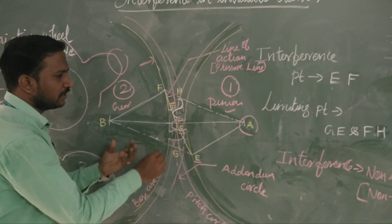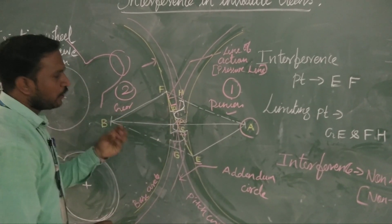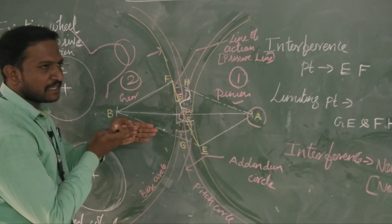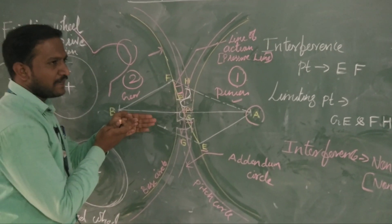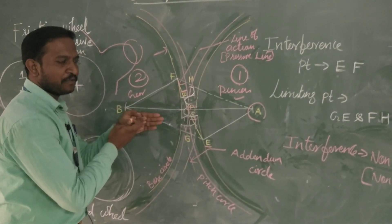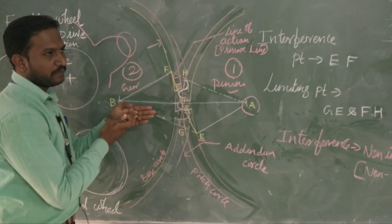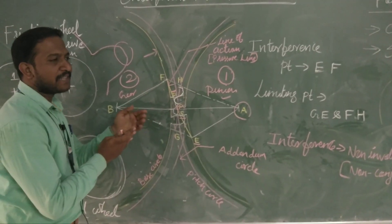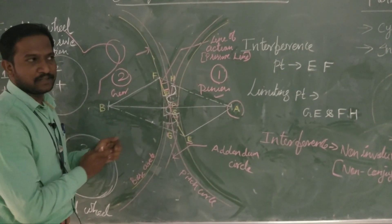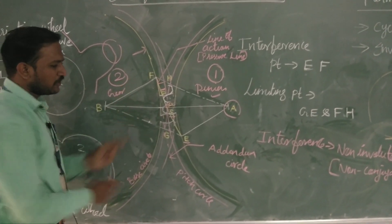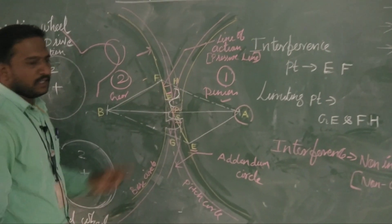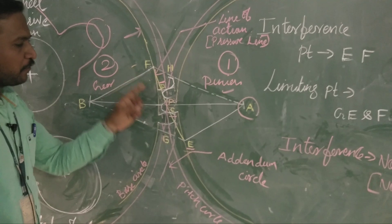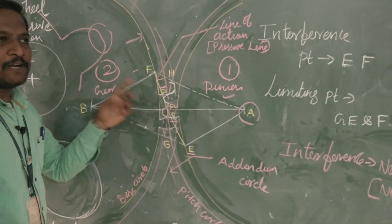In other words, interference means when two involute profiles are in contact, they will be tangentially connecting. But when interference acts, there is no involute profile - in other sense, we can call it non-conjugate. While this happens during gear meshing, it leads to interference. Points E and F are referred to as the interference points, and if you go beyond these points, it leads to interference. These are also called the limiting points.